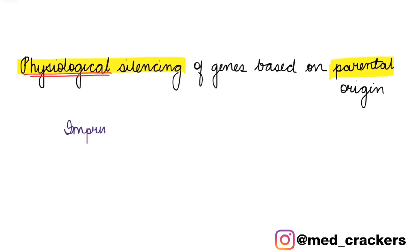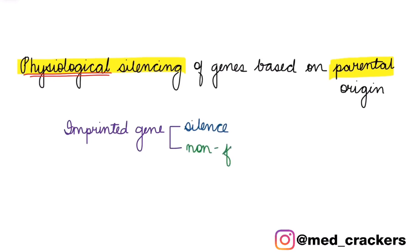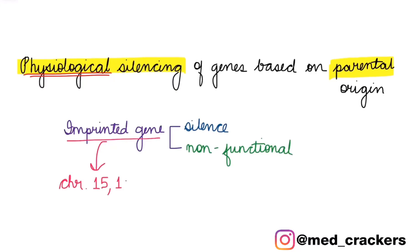When we say a gene is imprinted, it means two things: one, it is silenced, and two, it is non-functional — that is, though the gene is present on the chromosome, it does not code for any protein. Imprinted genes are commonly found on chromosomes 15, 11, and 7.